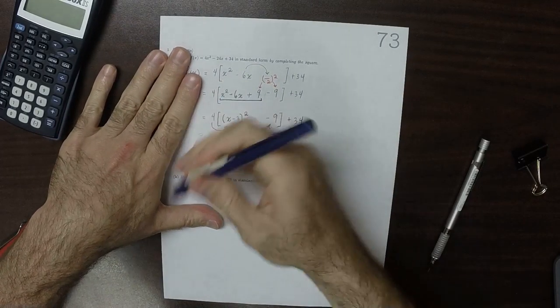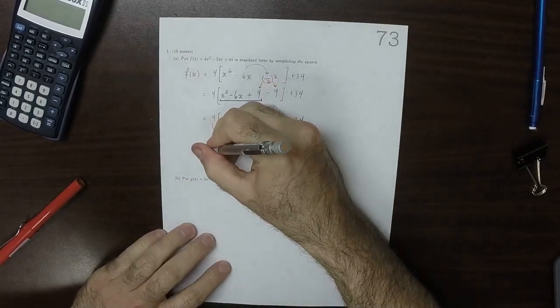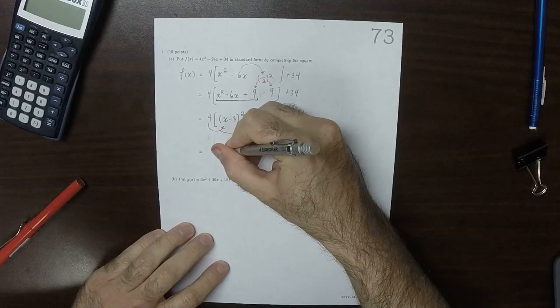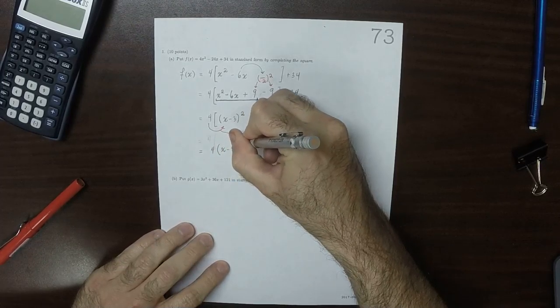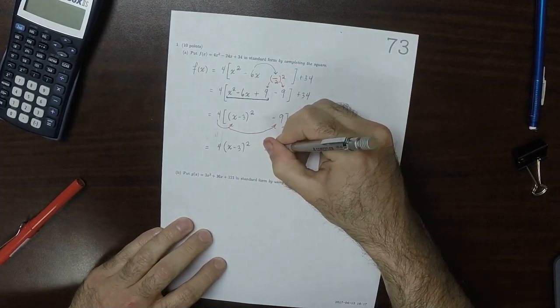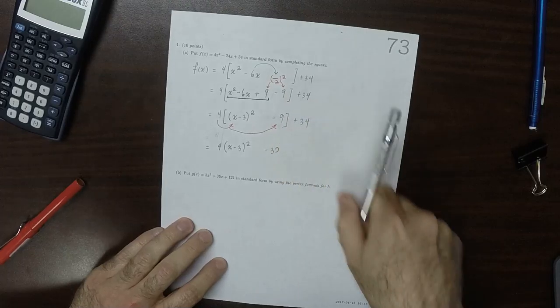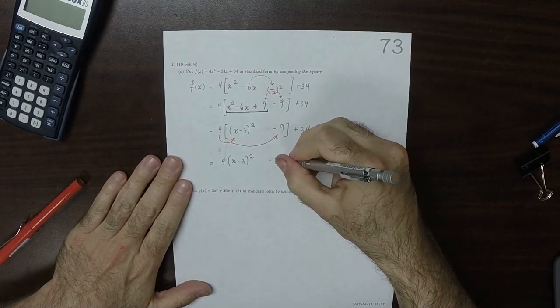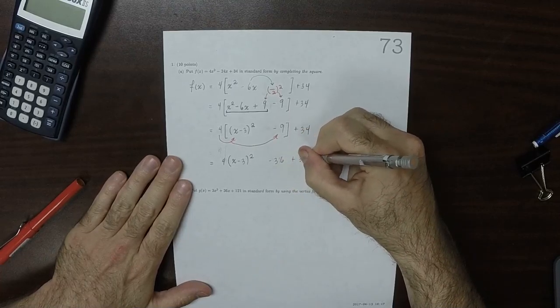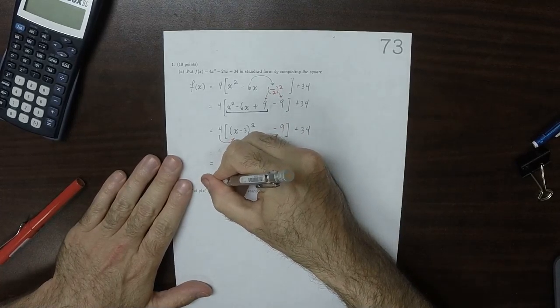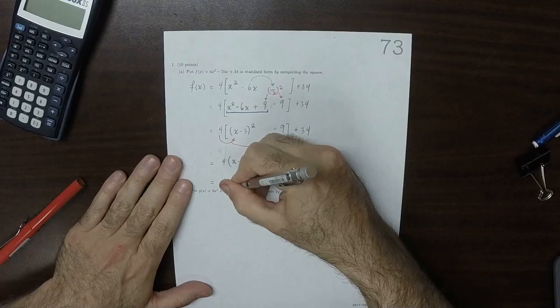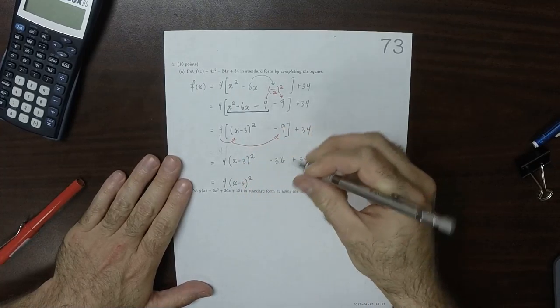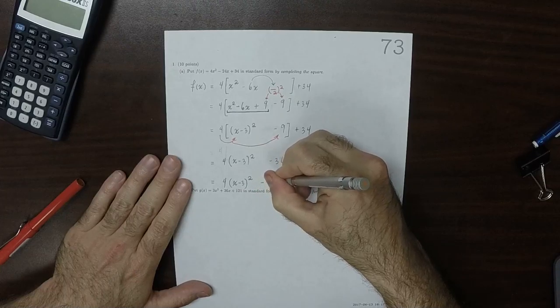Doing that, 4 times x minus 3 squared, minus 36, plus 34. So what we get for f is 4 times x minus 3 squared minus 2.